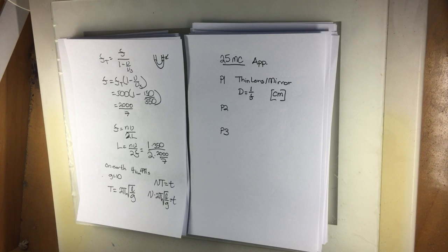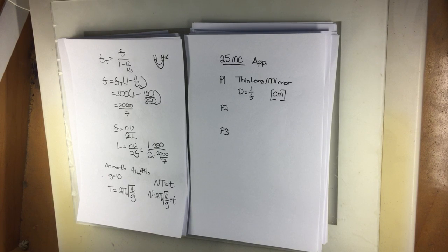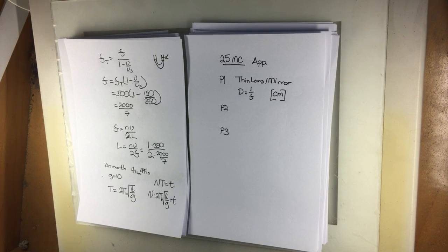The purpose of the ray diagram is to test your understanding of what the magnification means. The graders will know if you say magnification is negative two and then say the image is smaller and upright — you've got problems.